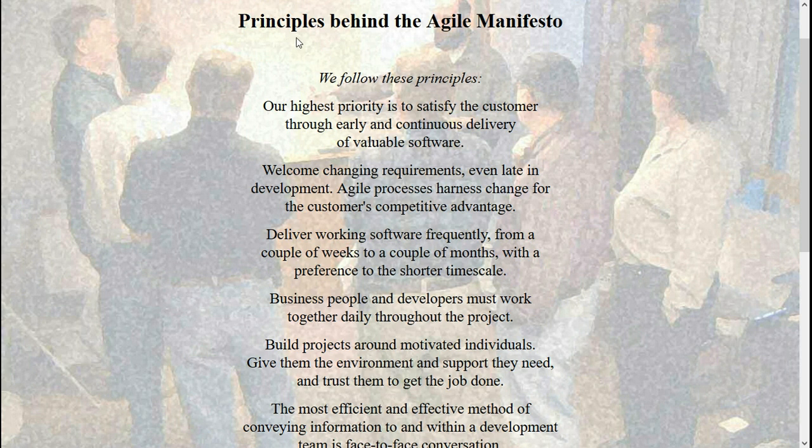After the four core values of agile, you should also know about the 12 agile principles. The agile manifesto principles are detailed guidelines for the agile values. The difference between agile values versus principles is that the principles give guidelines on how to actually observe the agile values in the project.